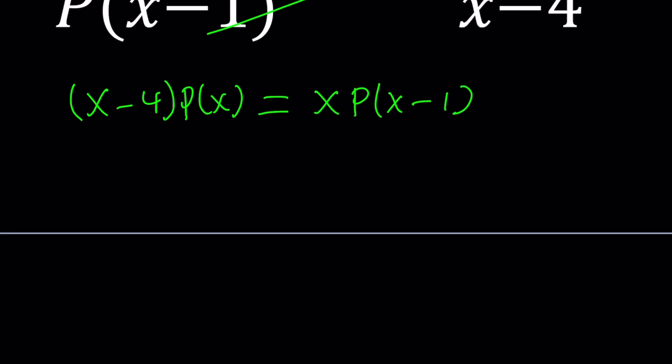Let's start with X equals 0. When I do replace X with 0, I get negative 4 times P of 0 equals 0 times P of negative 1. Now, 0 times anything is 0, right? No doubt about it. So from here, we get P of 0 equals 0.